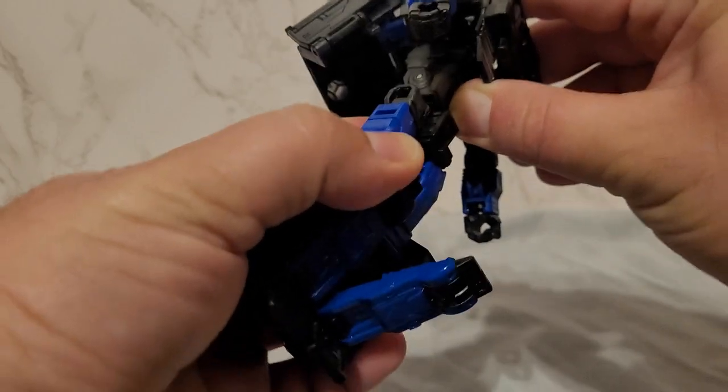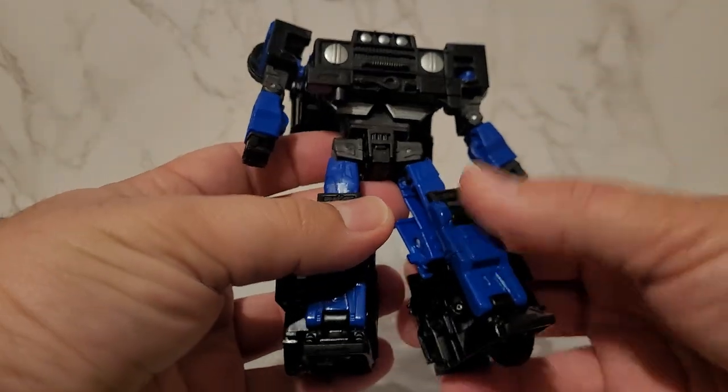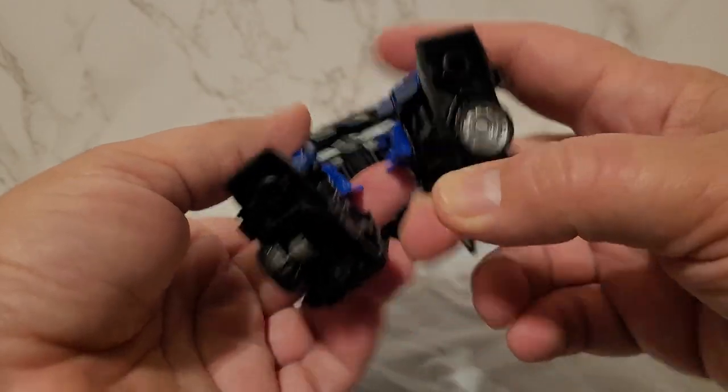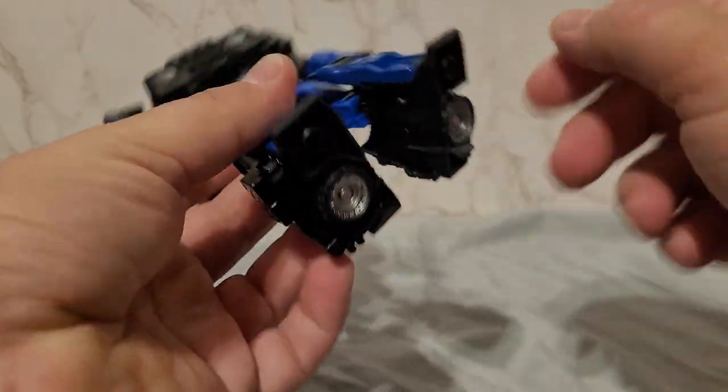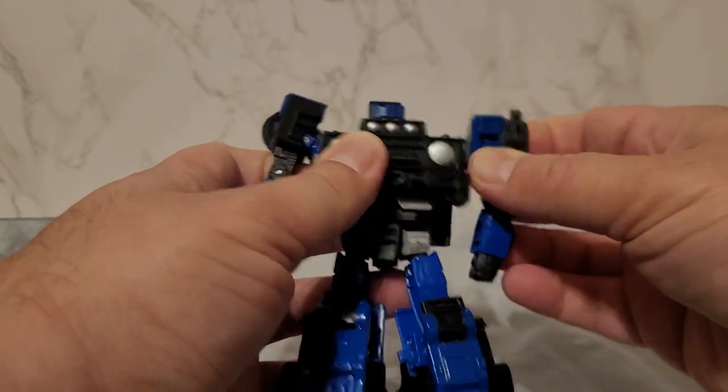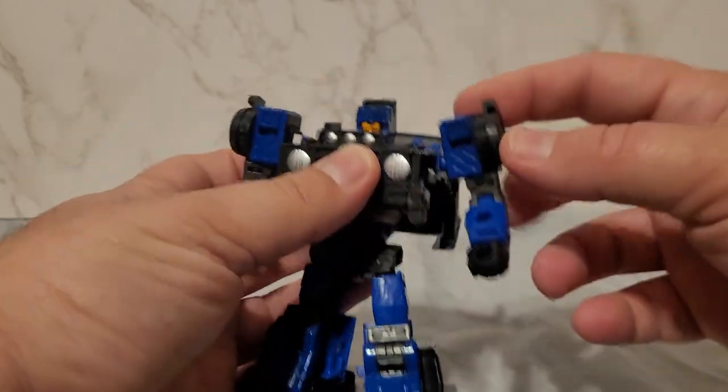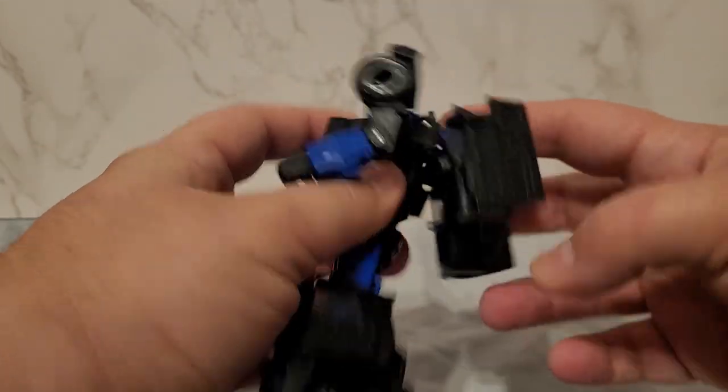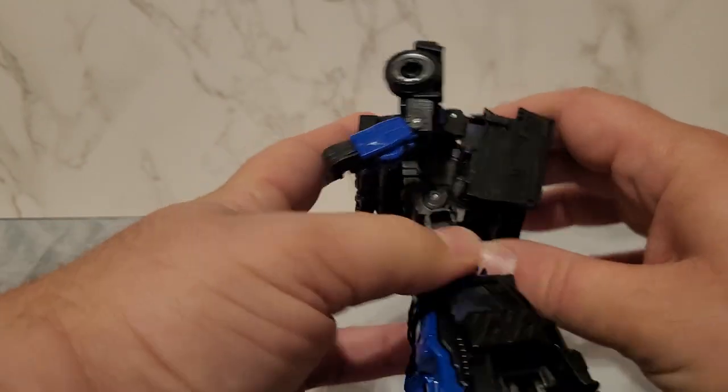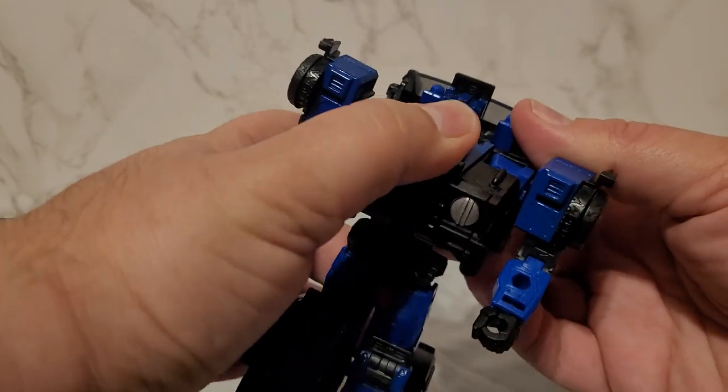Bring this down, separate the legs, fold in the wheels. Bring the shoulders forward, and then the back you just sort of leave it like so.